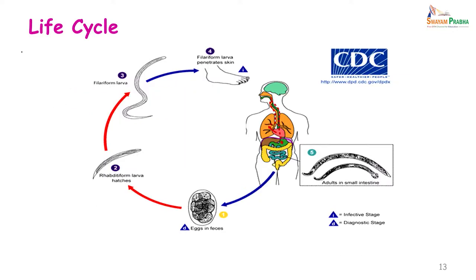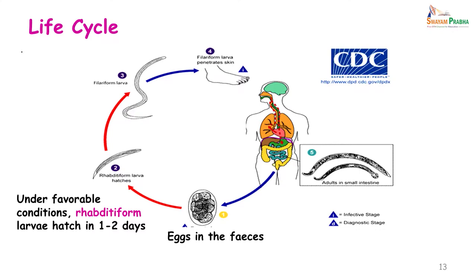The hookworm has an indirect life cycle. Eggs are passed in the feces and mature into the rhabditiform larva. This maturation takes about 1 to 2 days, provided an optimal environment — a shaded, cool, moist place — is provided. These further develop into the slender infective filariform larvae over the next 5 to 10 days.